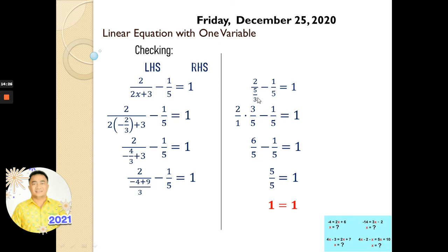This is division, so we change the operation to multiplication and take the inverse of 5 over 3. From 2 over 1, times 3 over 5 — the inverse. So 2 times 3 is 6, 1 times 5 is 5, minus 1 over 5 equals to 1. Then 6 minus 1 is 5, and 5 over 5 is 1. So our left-hand side and right-hand side are both equal to 1. Therefore, x equals negative 2 thirds is correct.